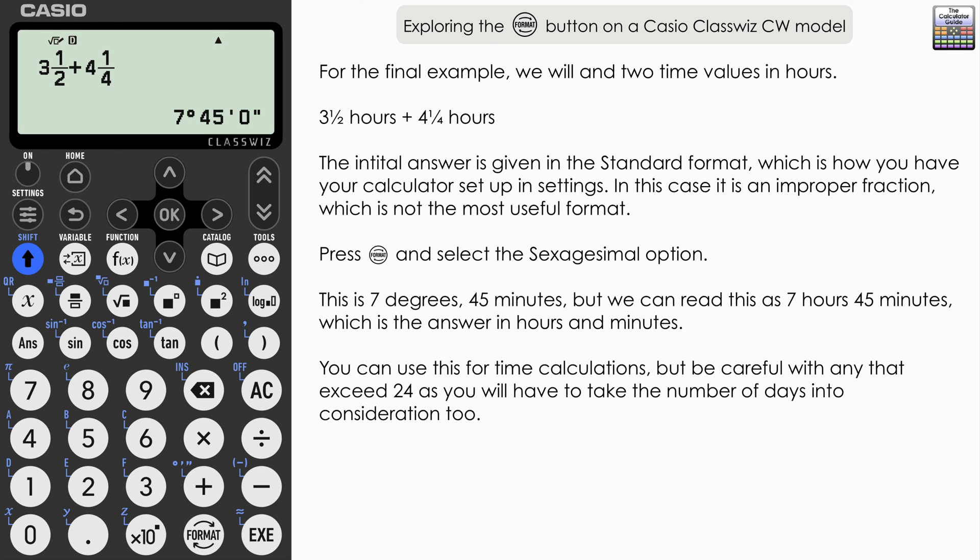So there we go exploring the format button on the CW range of ClassWiz. Hopefully in a future video, we can explore a little bit more about how the settings may alter that slightly. And once again, remember, I hadn't spotted the recurring decimal on the fx-991 CW model. So if you do have that model, it's for some reason not an option available to you. Let me know below if you've got a different model there with format and the sort of options that are available to you. Hopefully it's all of those. Don't forget to like and subscribe for future videos. But that's it for this video. Thank you very much for watching. And I shall see you next time on the calculator guide.